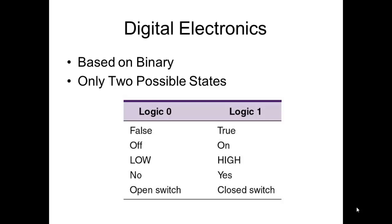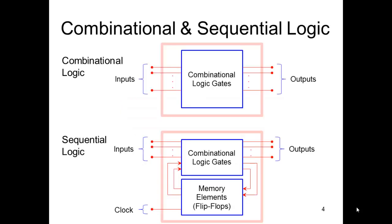Logic zero would be false or off or low or no or an open switch. Logic one would be true or on or high or yes or a closed switch. There are different kinds of logic: combinational logic and sequential logic.